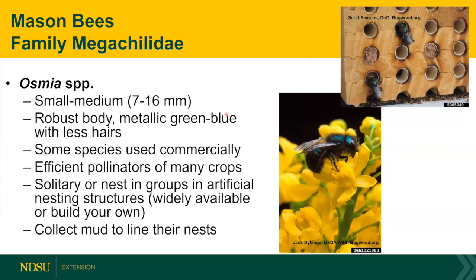Then there's the Osmia — the mason bees — which are pretty common. They're well known for use in crops for pollination of fruits and vegetables, and we've been using them in canola to help increase pollination. You can buy them with nesting materials, and they'll continue to nest throughout the summer. They're pretty easy to identify with their metallic blue, purple, or green coloring. Some of these native bees are actually more efficient than the European honeybee. You can see them plugging up holes with mud, and you can put bee hotels in your garden to attract different species.